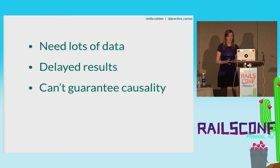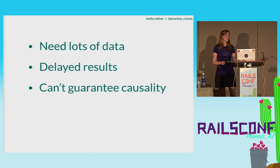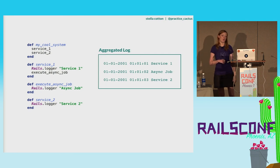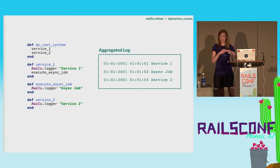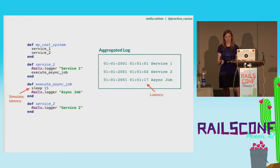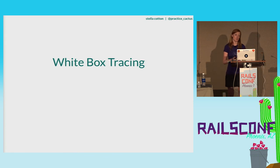Black box tracing is not a great fit for a lot of companies for a couple of reasons. One is that you need a lot of data to get accuracy based on statistical inference, and it can have some delays returning results. But the biggest problem is that in an event-driven or multithreaded system like Sidekiq, you can't guarantee causality. If service one kicks off an async job and then synchronously calls service two, if you start getting queuing delays, a timestamp might actually make it consistently look like your second service is making that call.